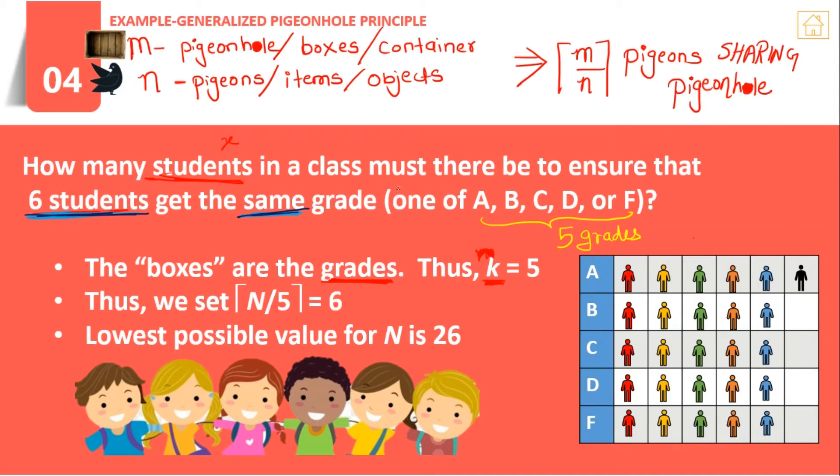Next example: how many students in a class must there be to ensure that 6 students get the same grade? The total possible grades are A, B, C, D, and F, meaning there are 5 grades. We have to calculate how many pigeons are in the pigeonhole principle. We need to find the value of m, given that m/n equals 6. The value of n boxes is given, so m/5 = 6.